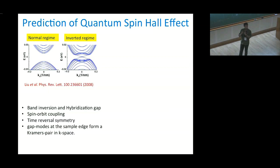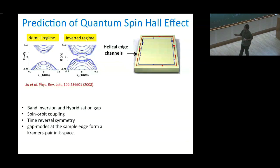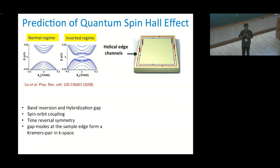then there are gapless edge modes in this hybridization gap. These two edge modes come from two different spins. From an experimentalist point of view, if you have a rectangular block and your Fermi level is somewhere in this gap, then you have one spin state going in one direction and another spin state going in the other direction. This is called the helical edge states.